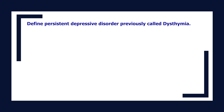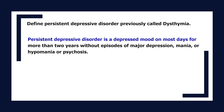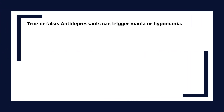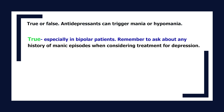Define persistent depressive disorder, previously called dysthymia. Persistent depressive disorder is a depressed mood on most days for more than two years without episodes of major depression, mania, hypomania, or psychosis. True or false: antidepressants can trigger mania or hypomania. True — especially in bipolar patients. Remember to ask about any history of manic episodes when considering treatment for depression.